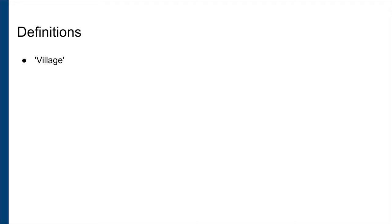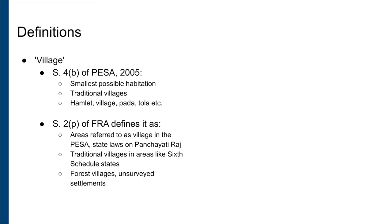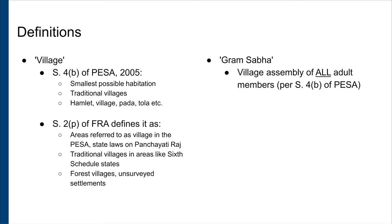A village is defined by the FRA as: 1. A village according to Section 4(b) of the PESA; or 2. Any area referred to as a village in the relevant state-level Panchayati Raj laws; or 3. In states not governed through the Panchayats, such as the Sixth Schedule states, the village constitutes the locally understood traditional village; or 4. Forest villages and old settlements including unsurveyed villages that may or may not be notified officially as a village, such as in several parts of Chhattisgarh and other states. The Gram Sabha is the same as defined in the PESA, i.e., a village assembly consisting of all adult members of the village, with the full and unrestricted participation of women.